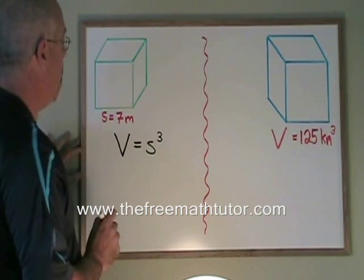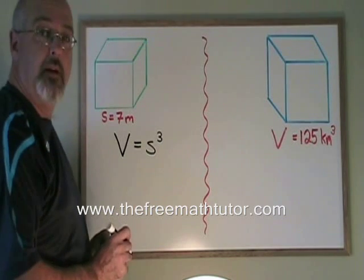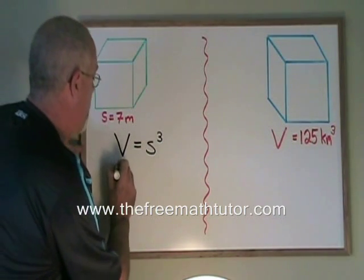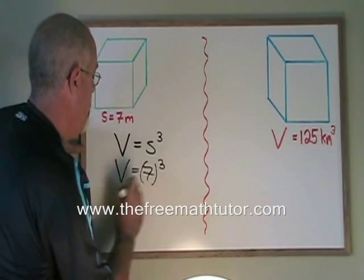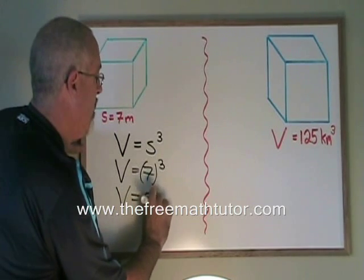In this example, the side length of this cube is 7 meters. So we will plug this into the formula. V is equal to 7 cubed. And the cube of 7 is 343.